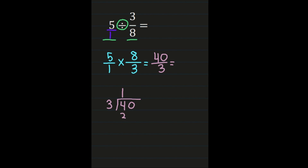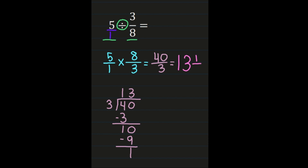Forty divided by three: four divided by three is one, one times three is three, and four minus three is one. Bringing the zero down, we have ten divided by three, which is three. Three times three is nine, and ten minus nine is one. So as a mixed number, we take the quotient — thirteen is our whole number — our remainder of one becomes the numerator, and our denominator of three remains the same. One-third is already simplified, so thirteen and one-third is our final answer.